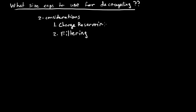Now that we've answered the question of why we need decoupling capacitors, let's turn to the question of what size they should be. For decoupling capacitors, there are two considerations we're trying to resolve: we're trying to make sure there's a charged reservoir in the local environment of the IC, and we're also trying to make sure there's a lot of filtering to filter out the high-frequency components.